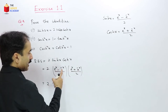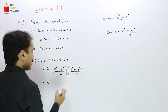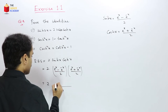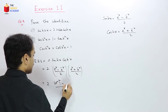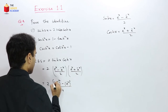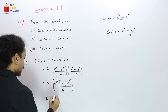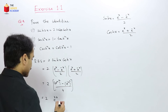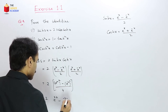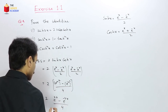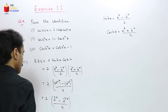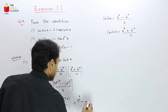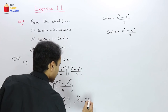Multiplying: 2 · [(eˣ − e⁻ˣ)/2] · [(eˣ + e⁻ˣ)/2]. Using (a−b)(a+b) = a²−b², this becomes (e²ˣ − e⁻²ˣ)/2, which by definition equals sinh(2x). So RHS = sinh(2x) = LHS, identity proved.